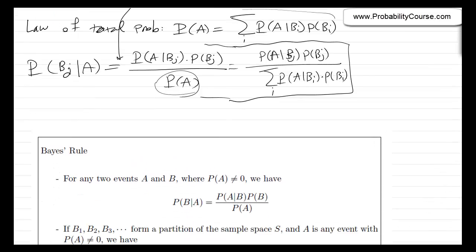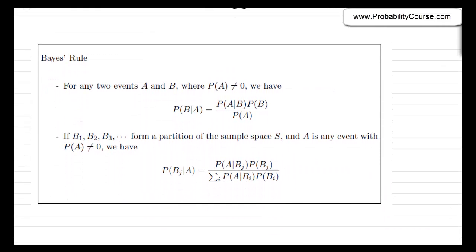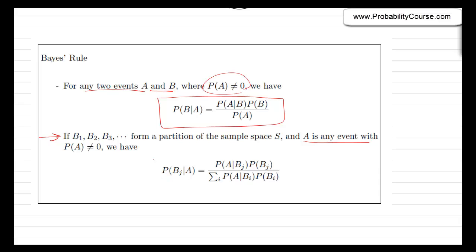Let's summarize everything we discussed here. For any two events A and B, where probability of A is non-zero because we are conditioning on A, we have probability of B given A is equal to probability of A given B times probability of B divided by probability of A. That's the Bayes' rule. A specific case is where B1, B2, B3 is a partition of the sample space S and A is any event. Then we can write probability of Bj given A — the numerator is the same as before, but the denominator is probability of A expanded using the law of total probability, as we discussed.